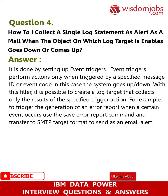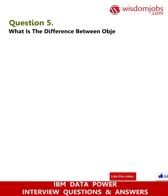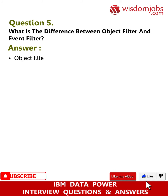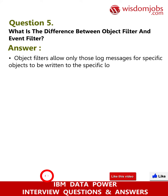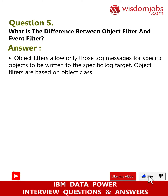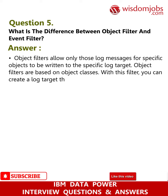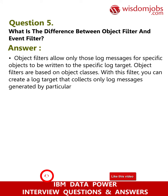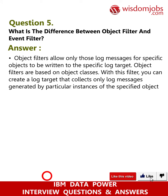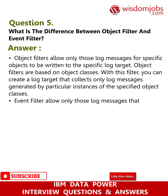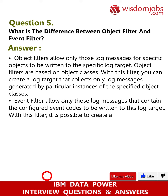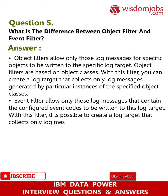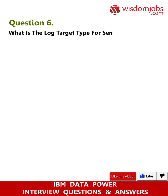Question 5: What is the difference between object filter and event filter? Answer: Object filters allow only those log messages for specific objects to be written to the specific log target. Object filters are based on object classes; with this filter you can create a log target that collects only log messages generated by particular instances of the specified object classes. Event filters allow only those log messages that contain the configured event codes to be written to this log target; with this filter it is possible to create a log target that collects only log messages for a specific set of event codes.